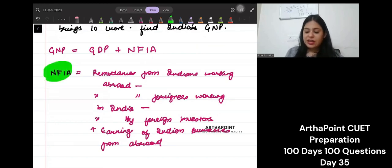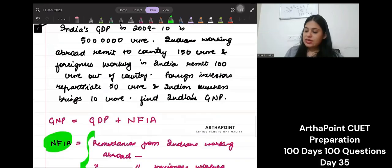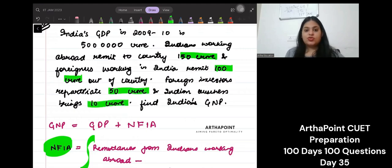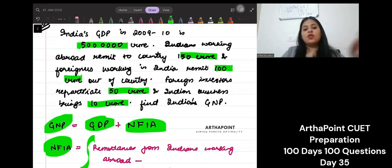Use this formula. Find NFIA based on the data that you are given. Use this information, find NFIA. In that NFIA, put it here. Add it to GDP of the country and give me the value of GNP.